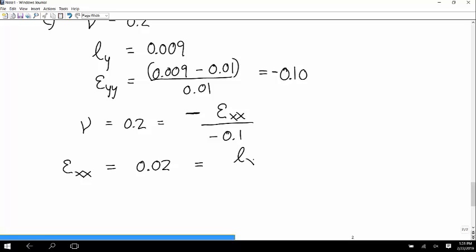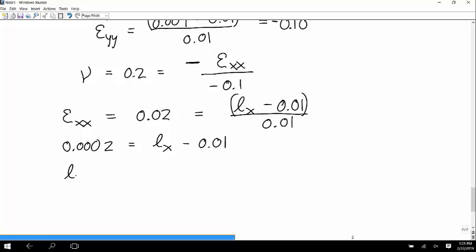And 0.02 is equal to the deformed length along the X axis minus 0.01, 0.01 divided by 0.01. And so you get 0.123 is equal to L X minus 0.01, 0.01. And so you get L X is equal to 0.01, 0.02. So if you have compression along the loaded axis, you have expansion along the off axis. That's the Poisson's effect in compression. Any other questions about that one?